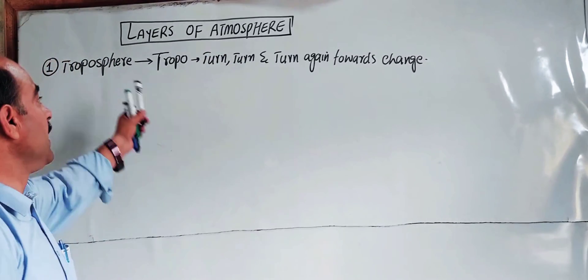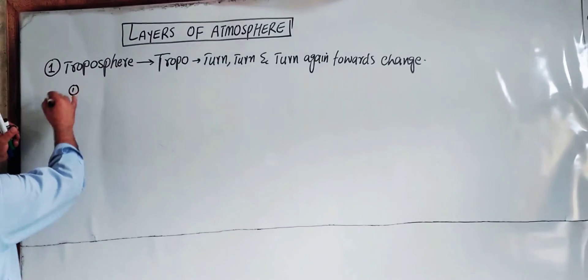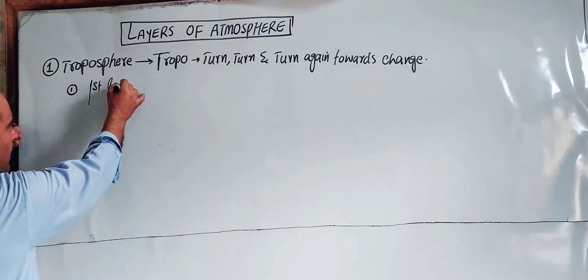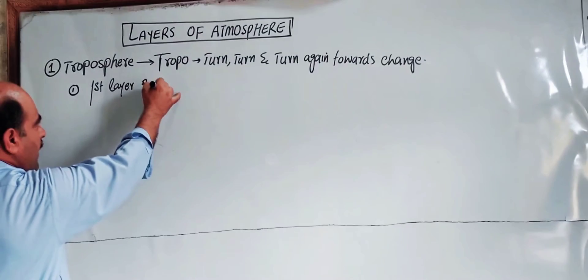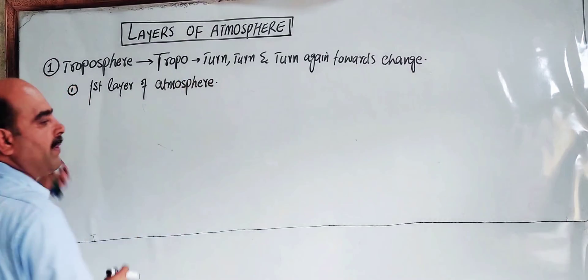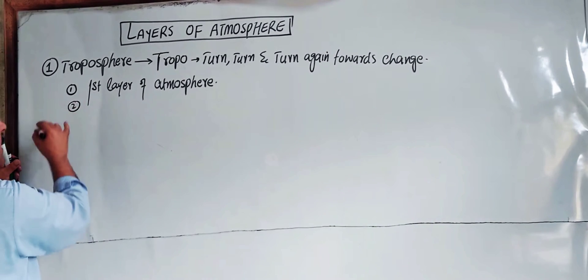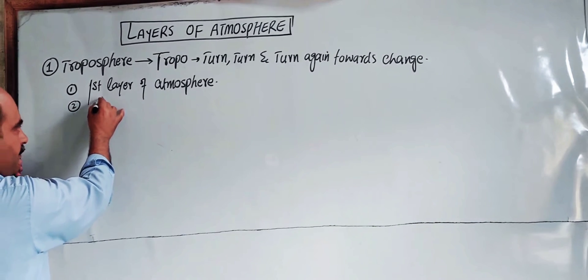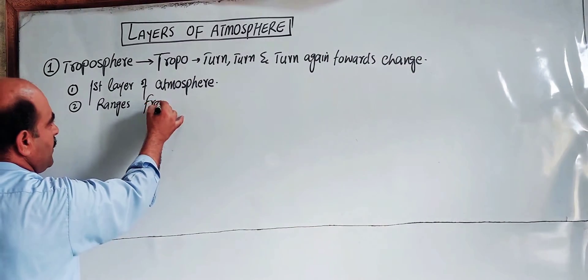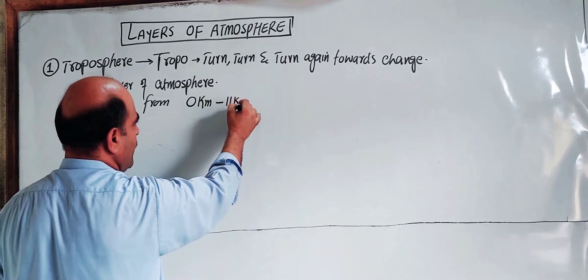The Troposphere is the first layer of the atmosphere. It ranges from sea level up to 11 km, that is from 0 km to 11 km.